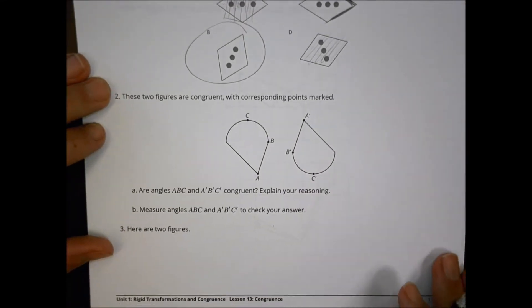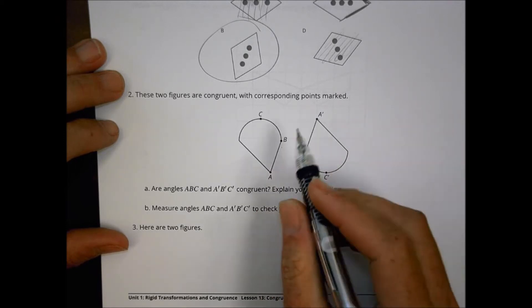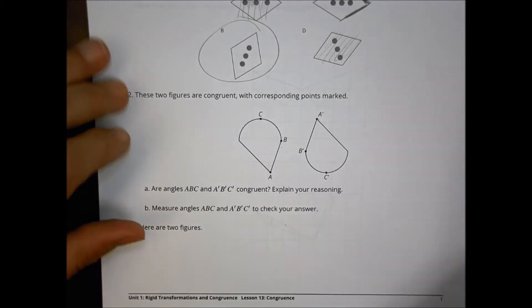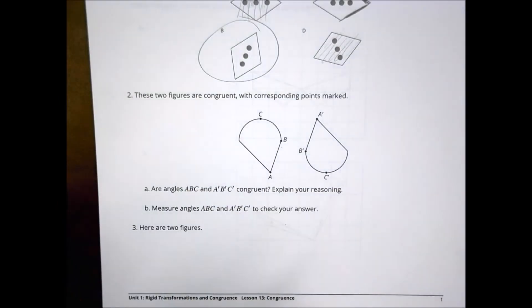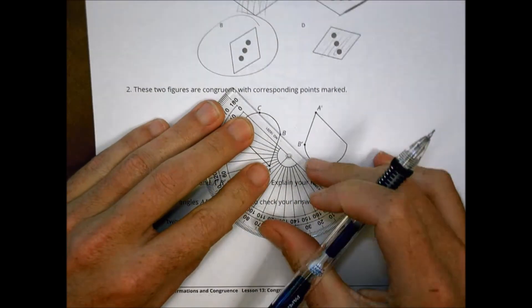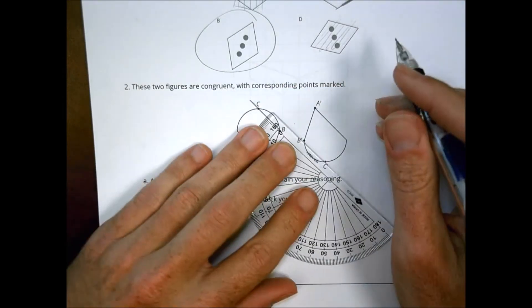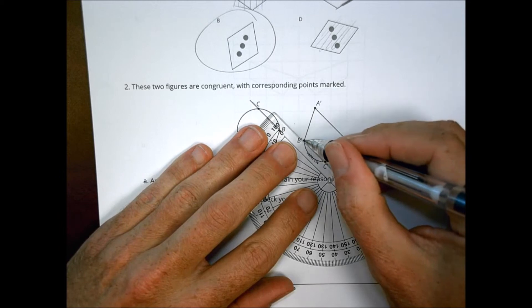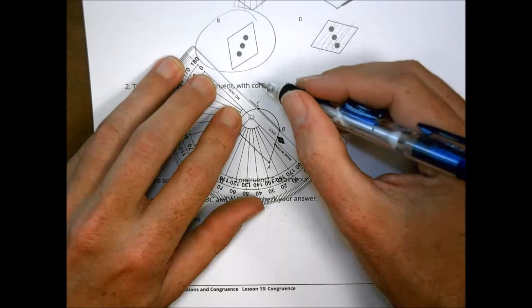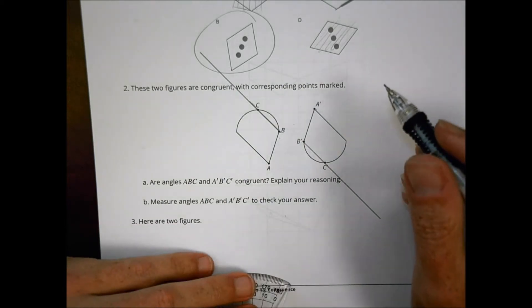For number two, these two figures are congruent with corresponding parts marked. So there's A, A prime, B, B prime, C, C prime. It wants to know are angles ABC and A prime B prime C prime congruent. So the angle measurements here. To do that, I'm going to need to add the angle measurements. So I'm going to line up points B and C right here to make that line up there. I'll make it a little bit longer, it just helps me later on in the measurement. So are they congruent or not? I would say the answer is going to be yes. They are going to be congruent. But the reason behind that, when you have corresponding shapes, the angles and the side measurements are going to be corresponding as well.